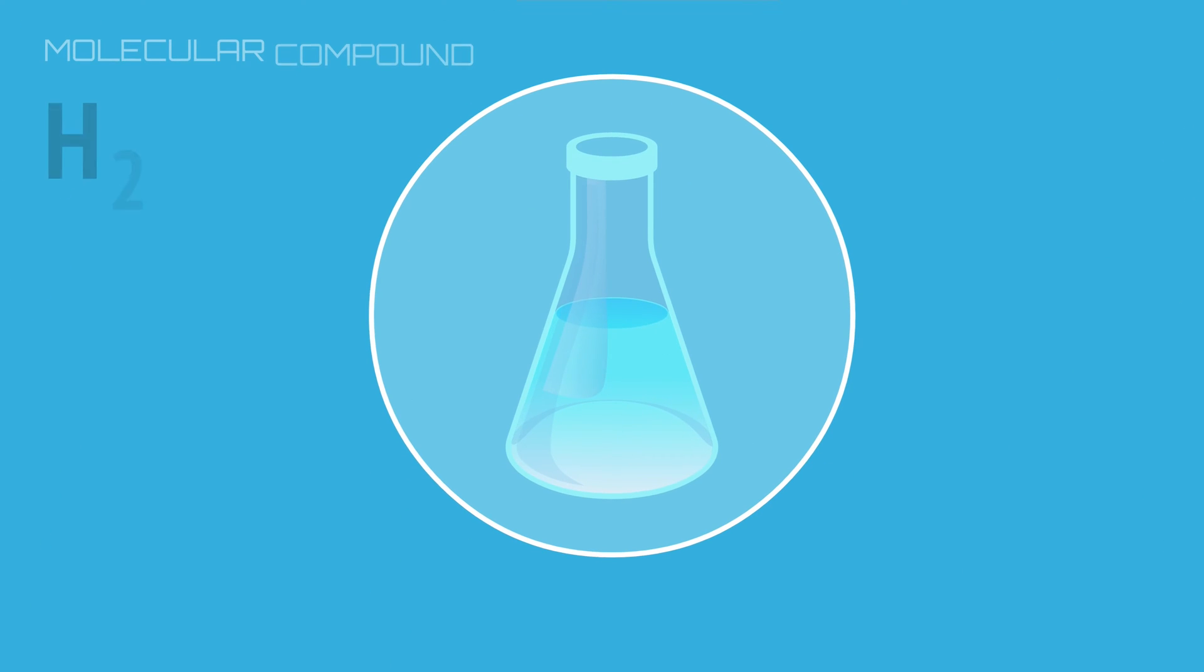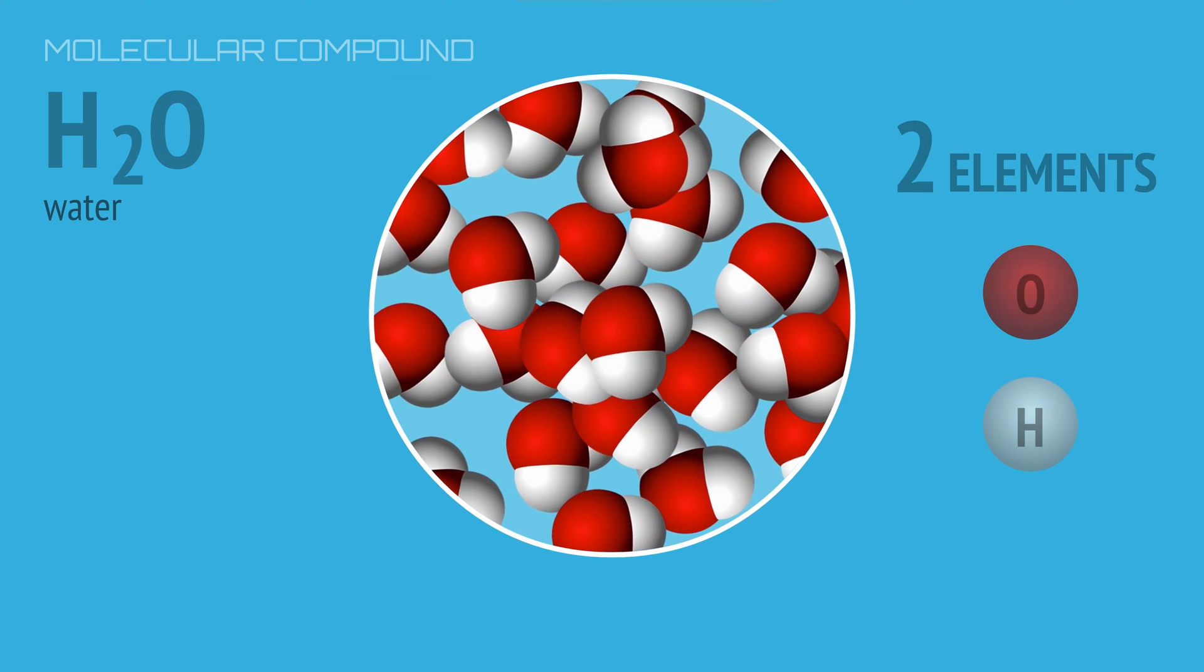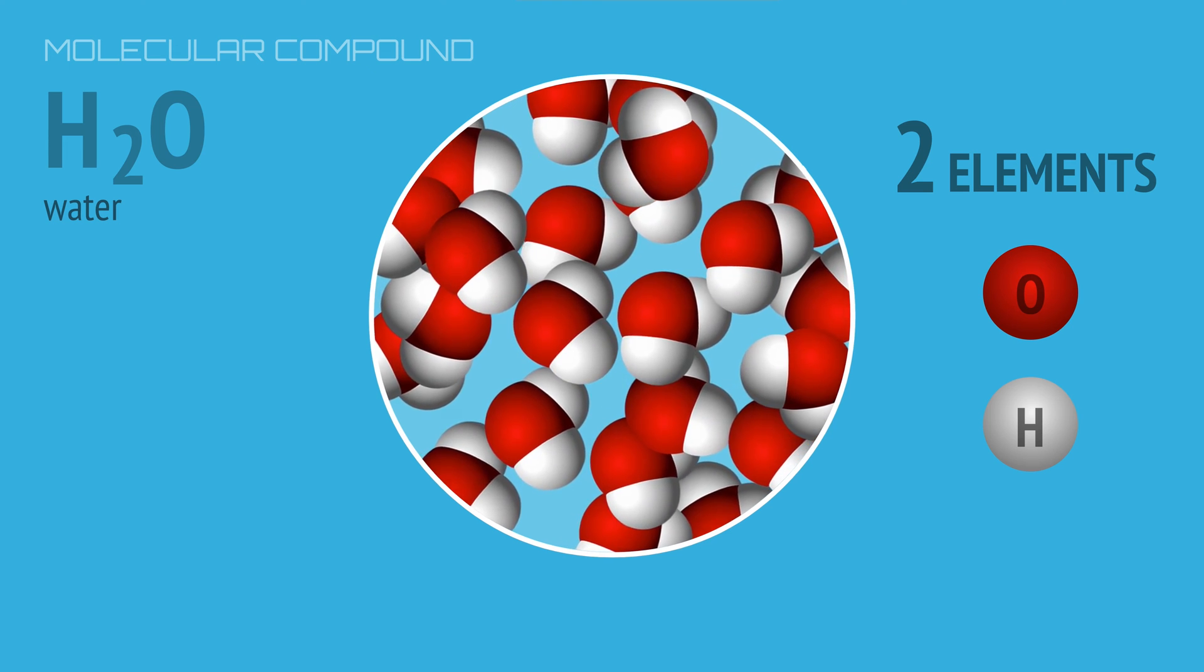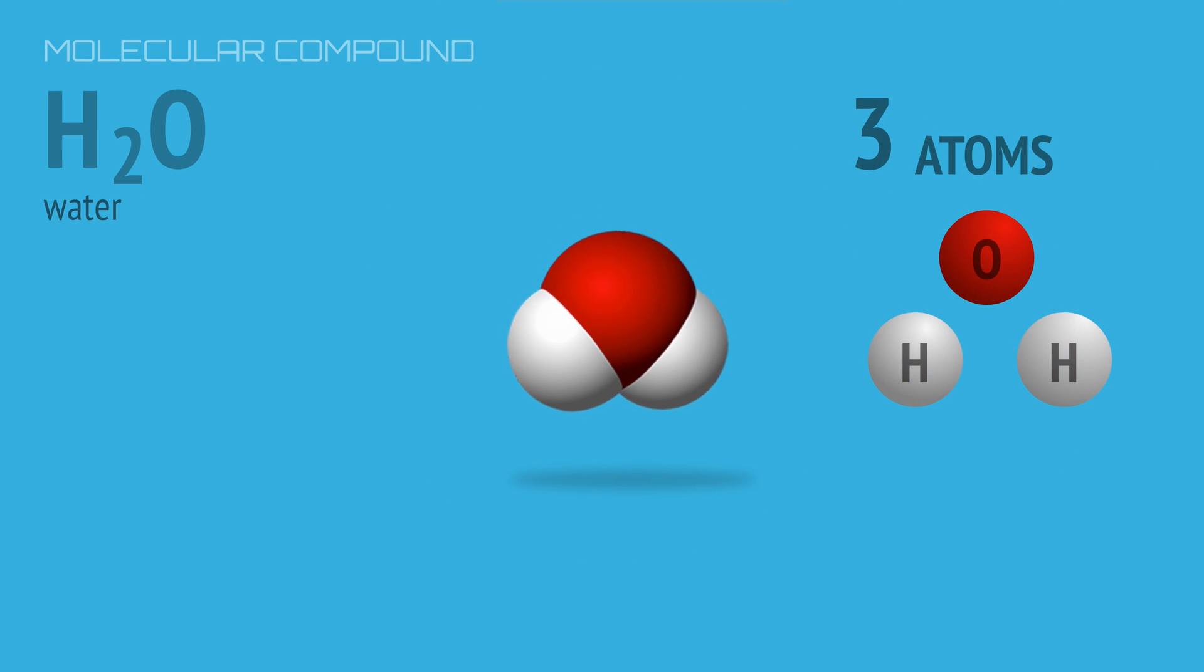One way to understand the difference between atoms and elements is to look at a compound like water. Water is made up of two elements, hydrogen and oxygen. But each water molecule is made of three atoms, two hydrogen and one oxygen.